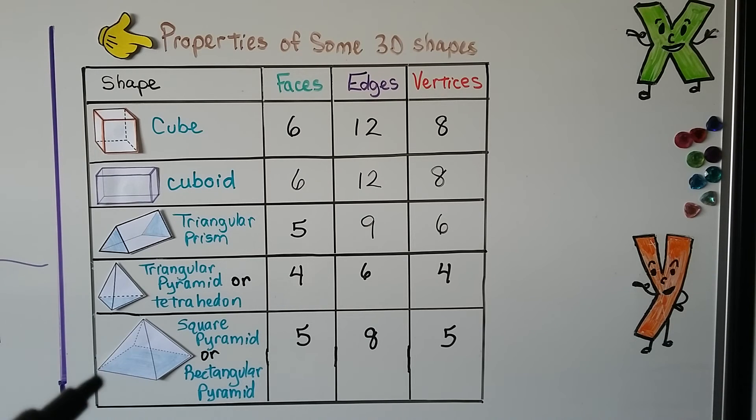A square pyramid, or rectangular pyramid, remember it's named because of the shape of the base, has 5 faces. It's got 4 going around and the one on the bottom, which we can also call the base. It's got 8 edges connecting those faces, and it's got 5 vertices.